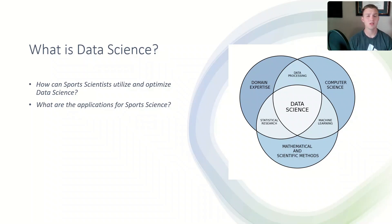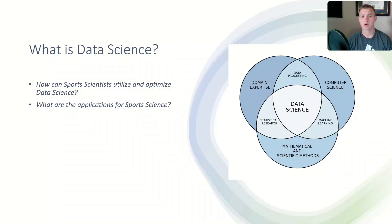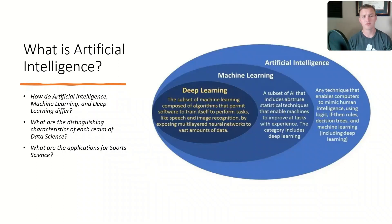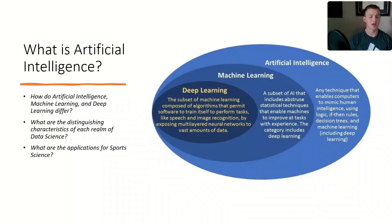From this diagram, we see that machine learning is a subset of data science that relies on computer science and mathematics, and it's used to create models for predictive forecasts, pattern recognition, and prescriptive insights. It's common for terms like artificial intelligence, machine learning, and deep learning to be used interchangeably, but there are subtle differences that we need to be aware of. Artificial intelligence has a wide range of applications, and machine learning seems to have the most applications within sports science.